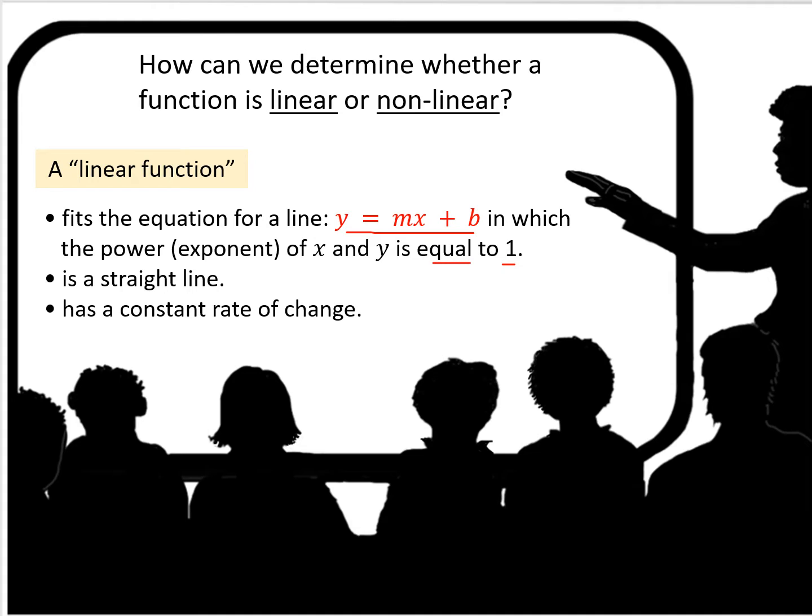Equal to one. So you can only have x and y, and the exponent if it's equal to one is not shown, it's assumed. But if you see anything else as an exponent, it's not a linear function.